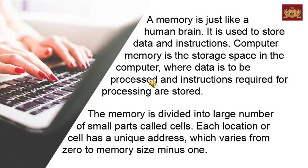A memory is just like a human brain. It is used to store data and instructions. Computer memory is the storage space in the computer where data is to be processed and instructions required for processing are stored. The memory is divided into a large number of small parts called cells.